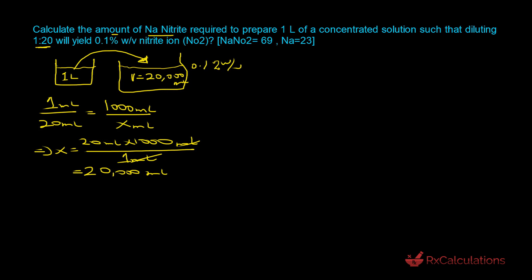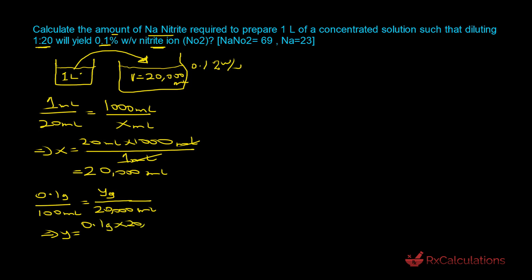Now we figure out how much nitrite ion is present in the 20,000 mL solution — all of that nitrite ion will come from the one-liter concentrated solution. Using the concentration of 0.1 percent weight by volume, that means 0.1 grams per 100 mL. Solving for y: y = 0.1 g × 20,000 mL ÷ 100 mL = 20 grams of nitrite ion.